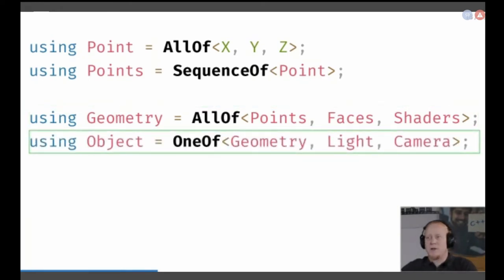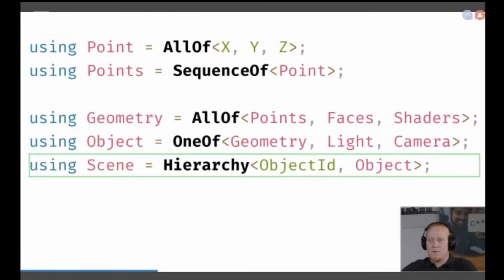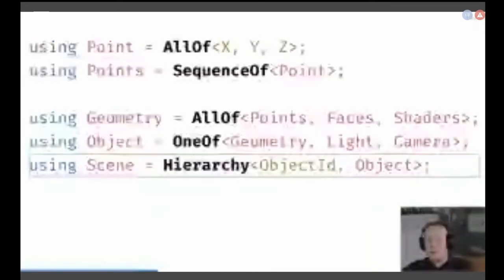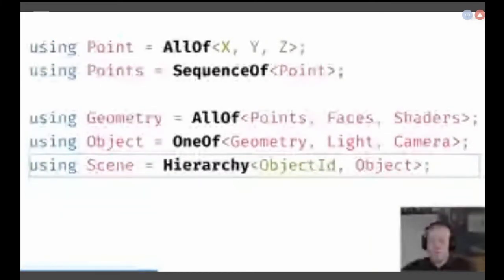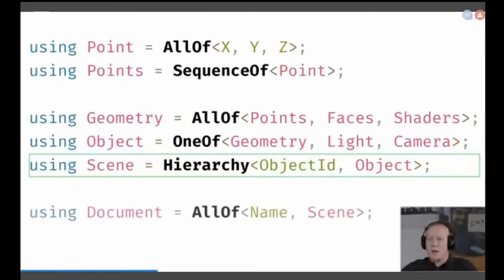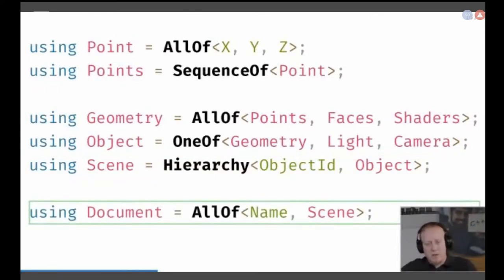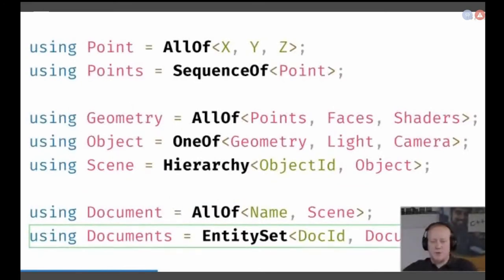If you combine geometry with something else — one of geometry, light, or camera — that's an object. With a hierarchy of objects we get a scene, like a computer gaming scene. We can combine the scene with a name — so all of name and scene gives us a document. We might have multiple documents open at the same time in our application, like in Word. And this is actually C++.